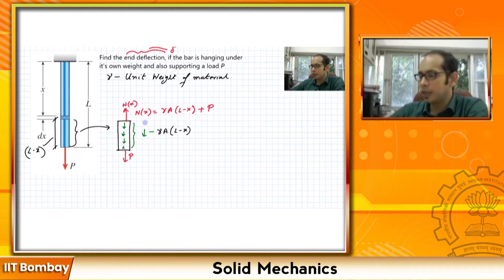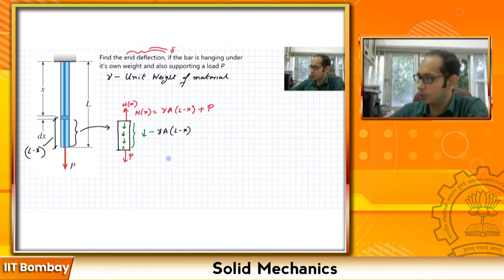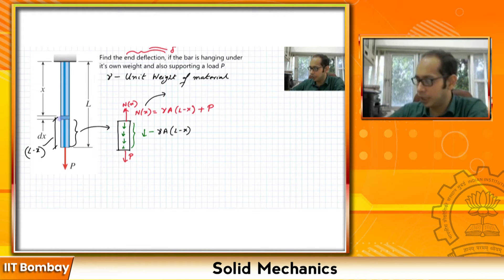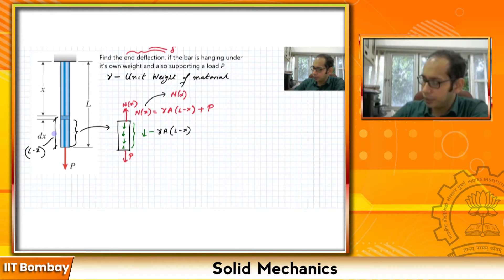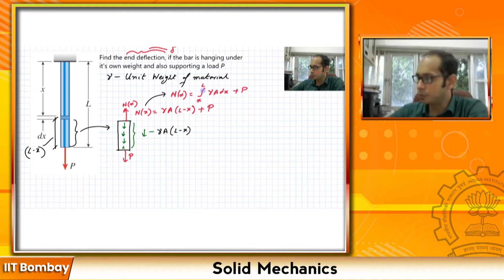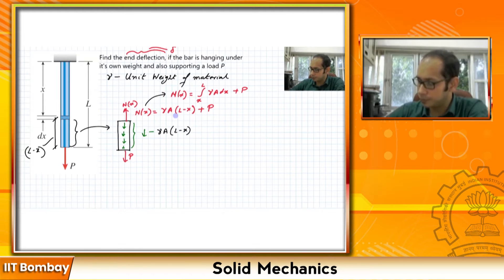These are all acting vertically down, so N(x) is vertically up. Another way to get N(x) is to take the infinitesimally small length dx and integrate from x to L: N(x) = integral from x to L of gamma·A dx plus P, which gives gamma·A·(L − x) + P — equivalent to what we got before.